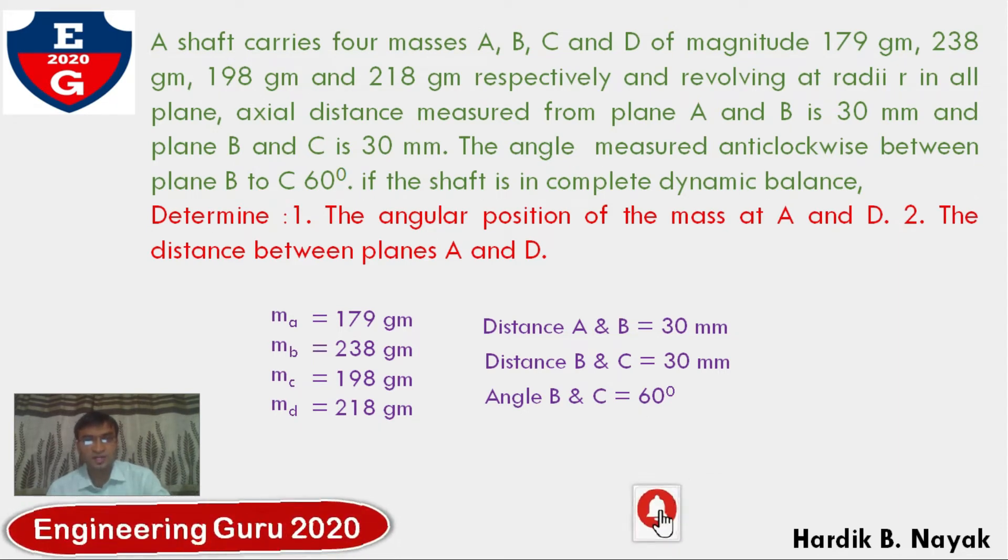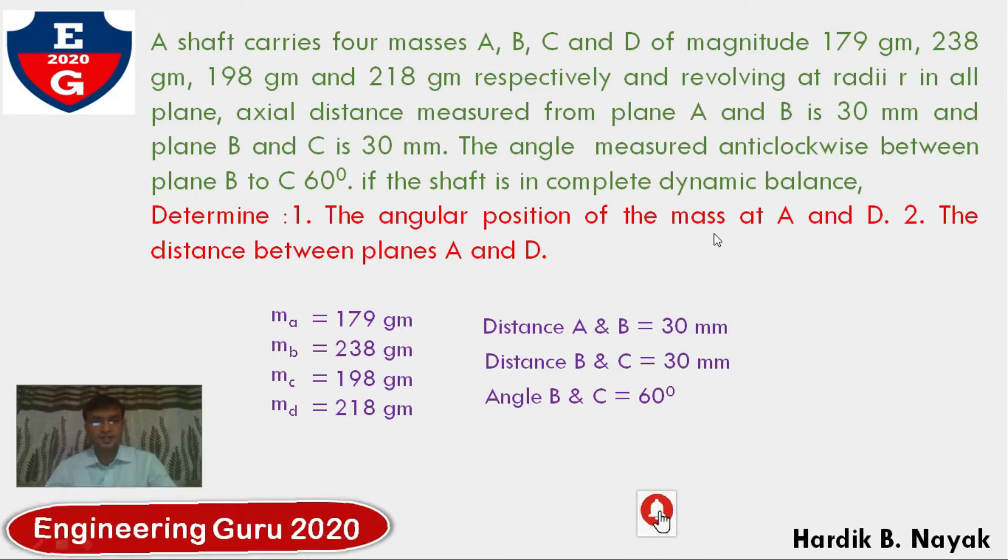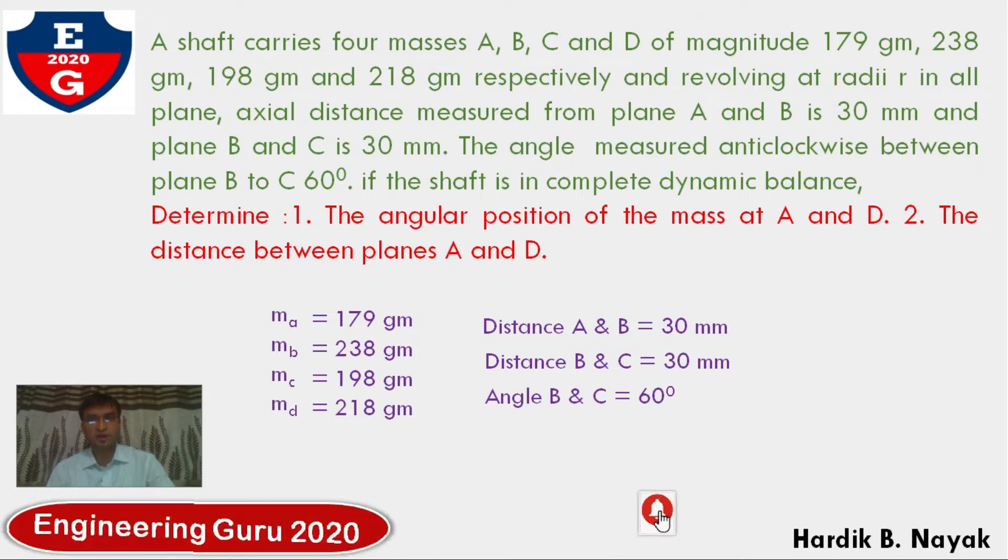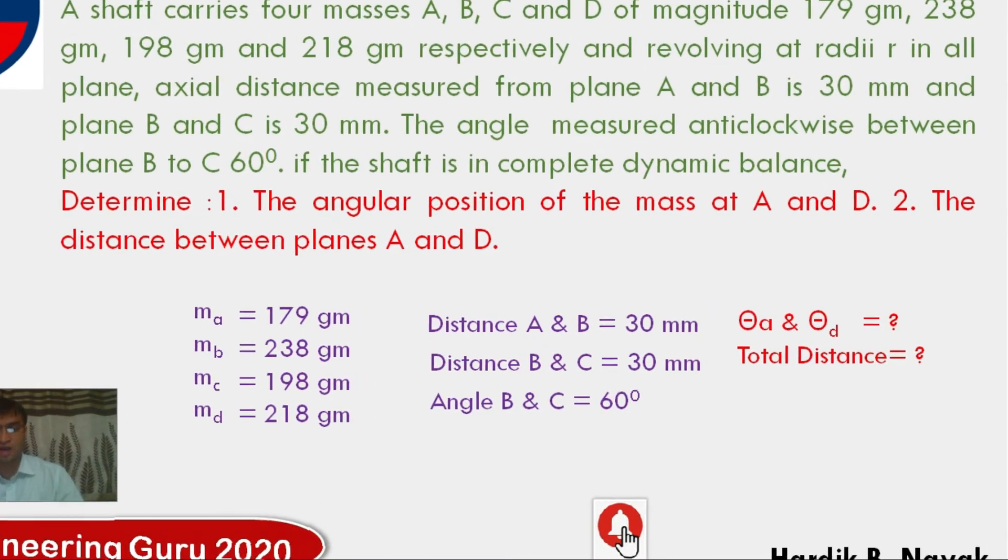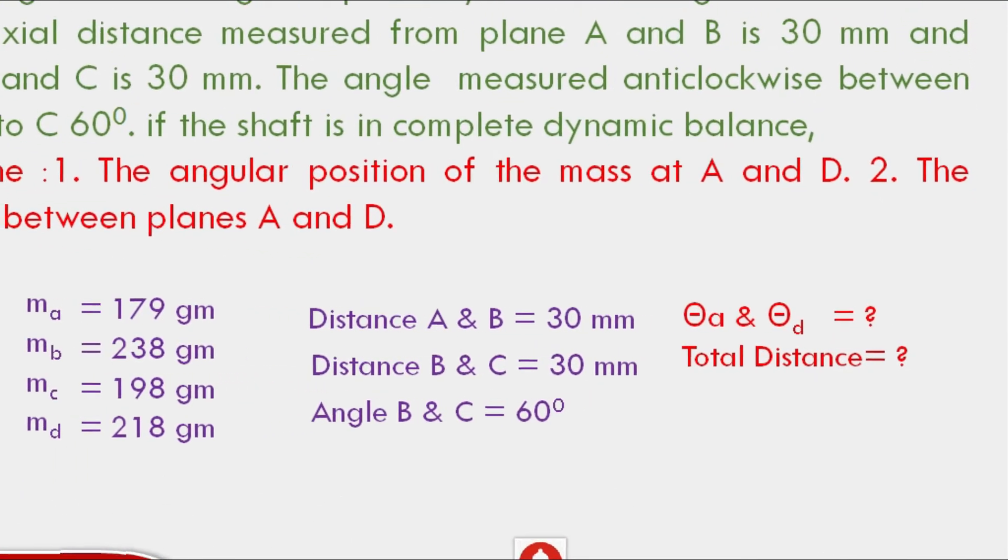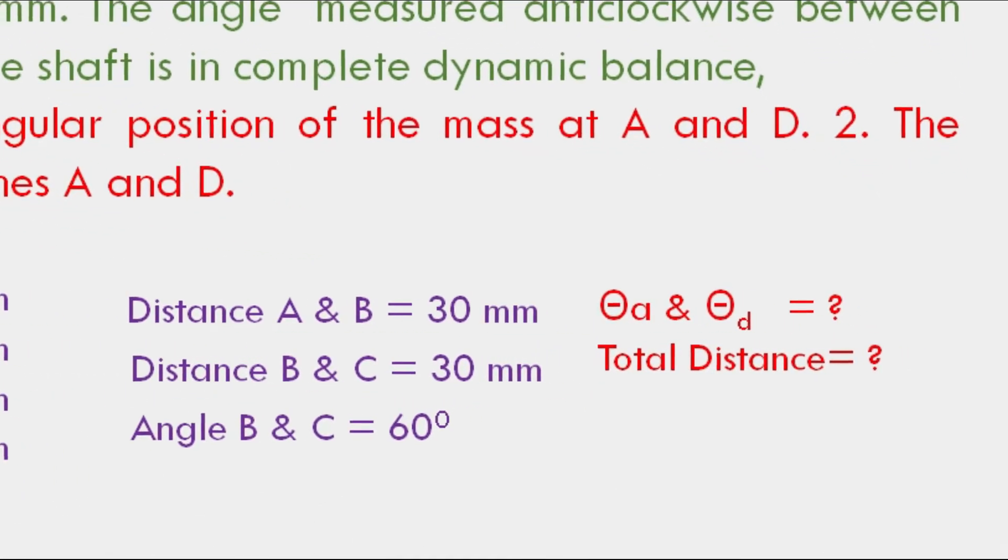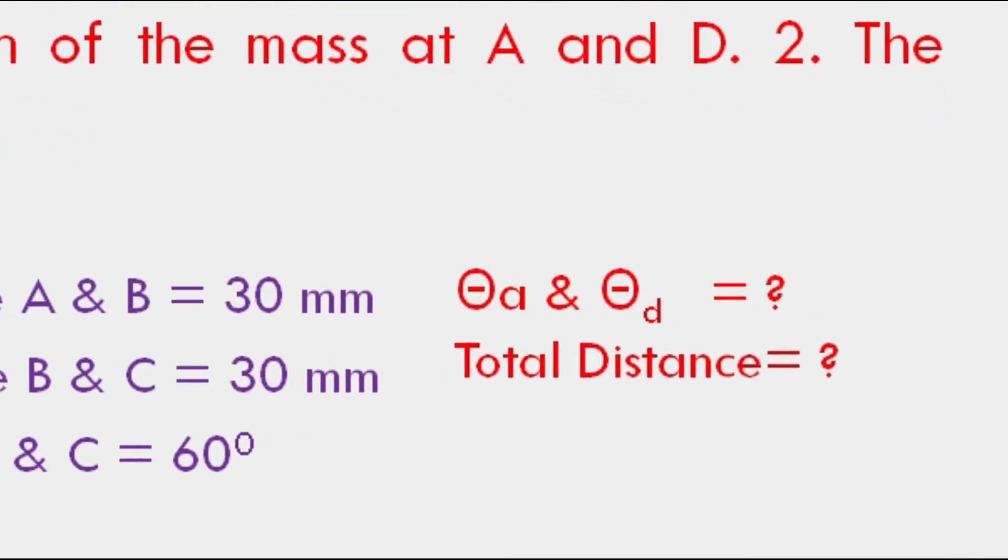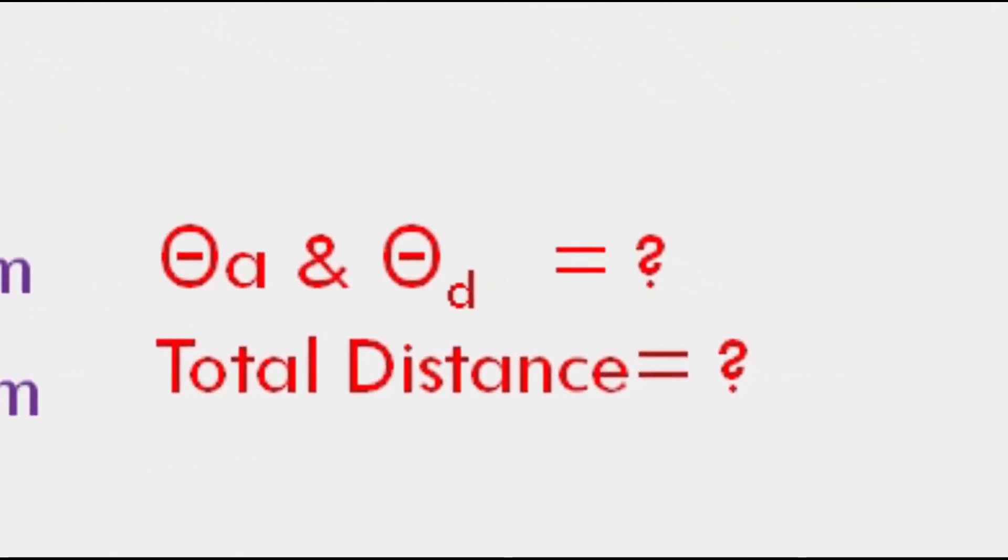If the shaft is in complete dynamic balance, determine: first, the angular position of the mass at A and D, and second, the distance between plane A and D. So our first goal is to find theta A and theta D, and second goal is to find total distance.